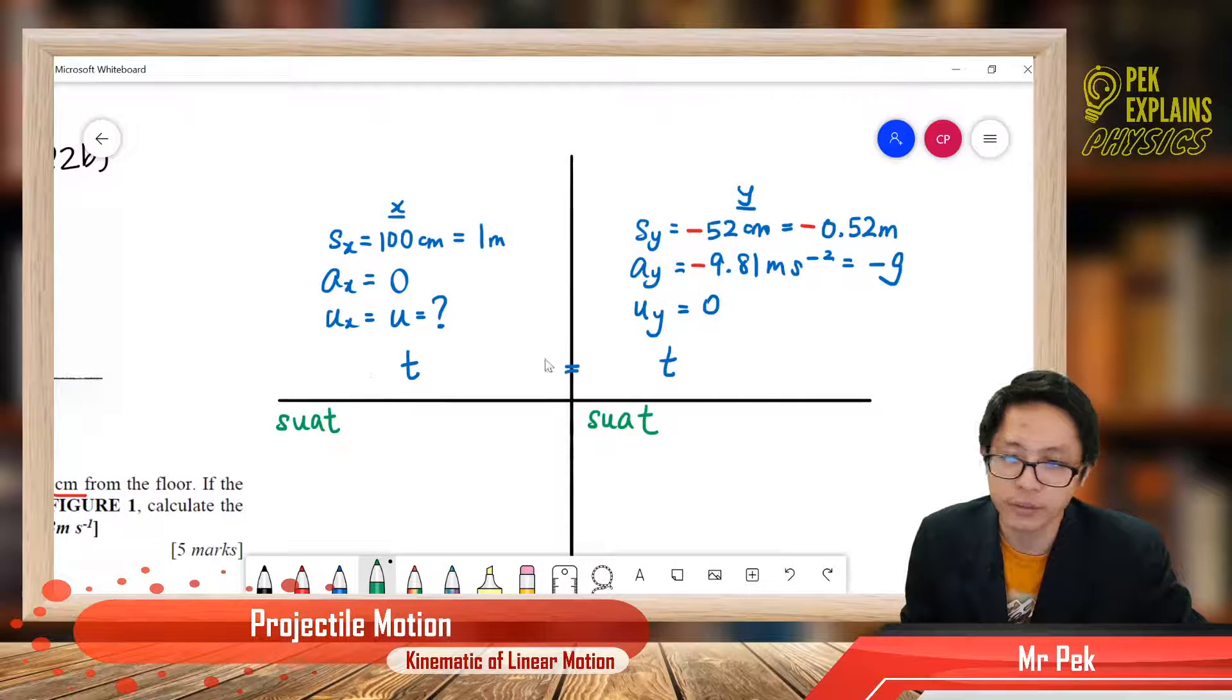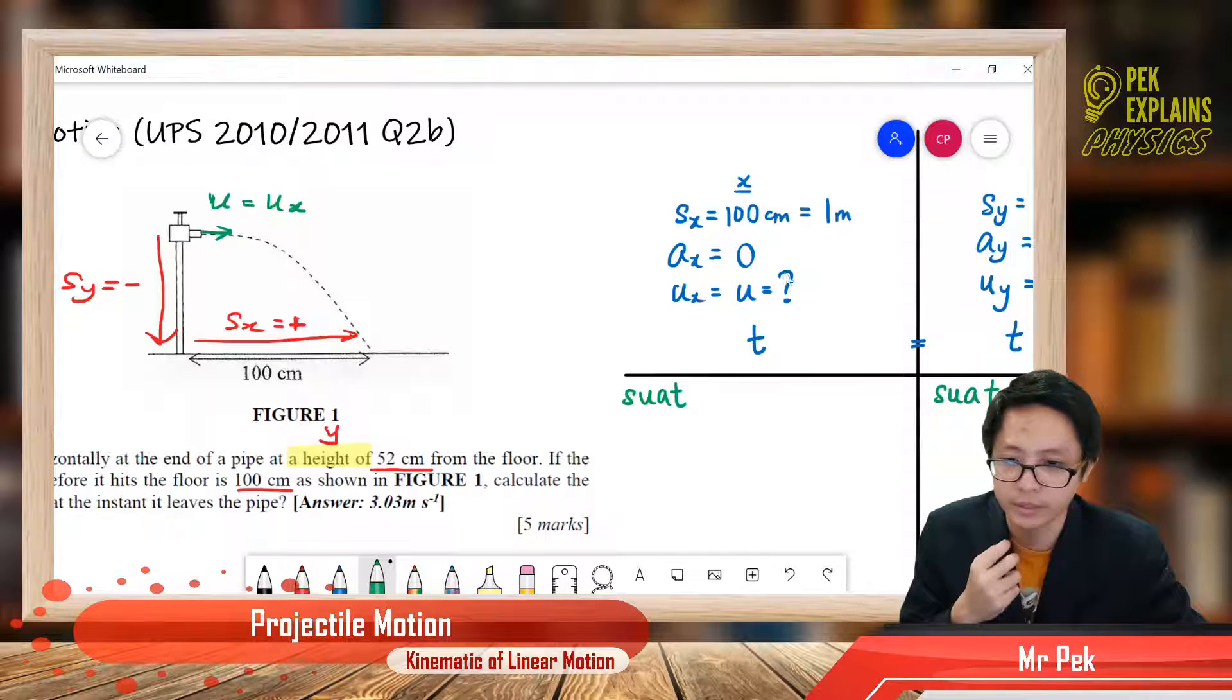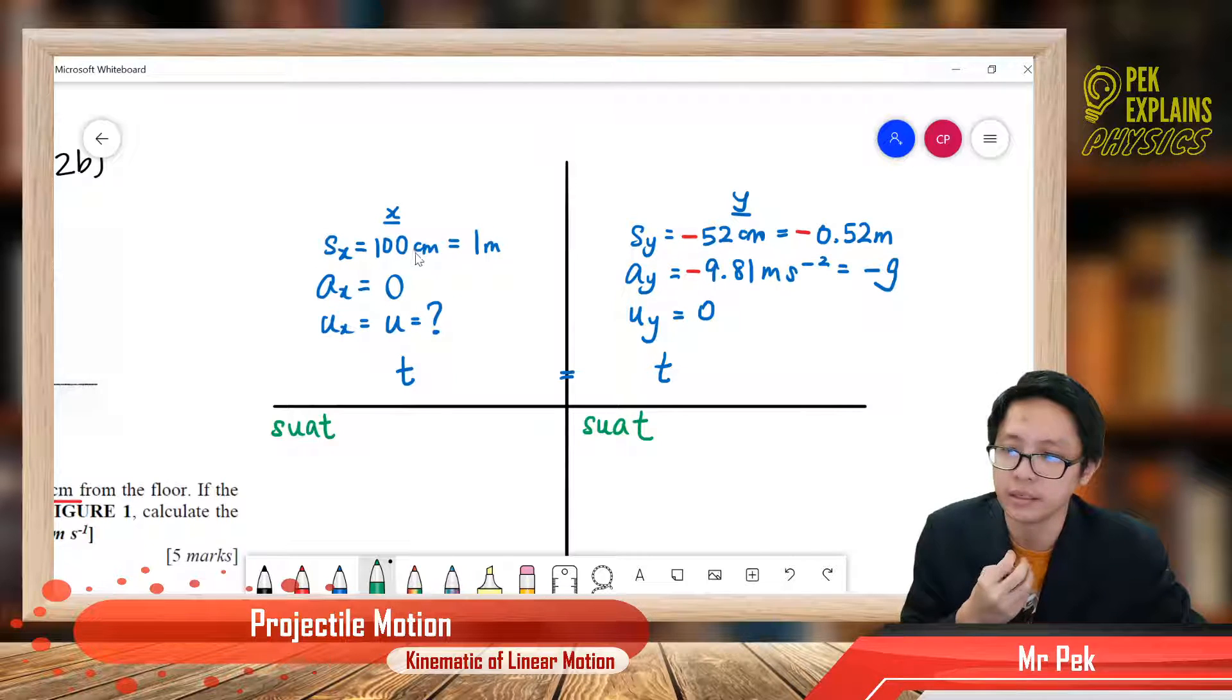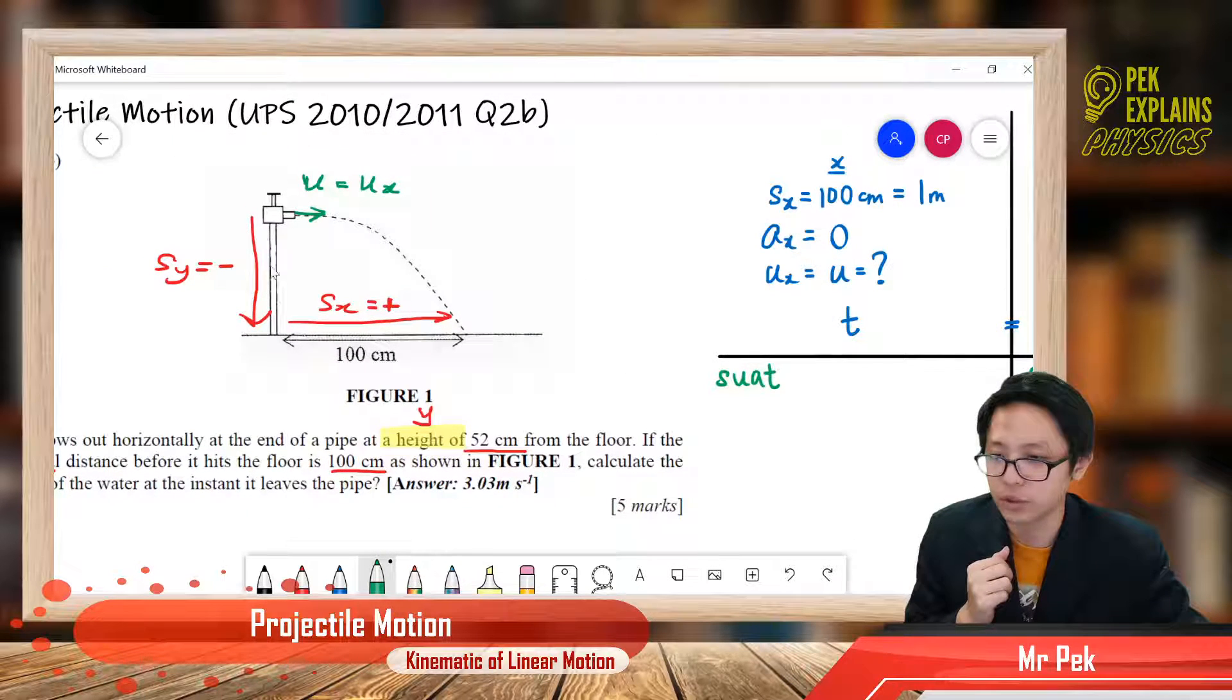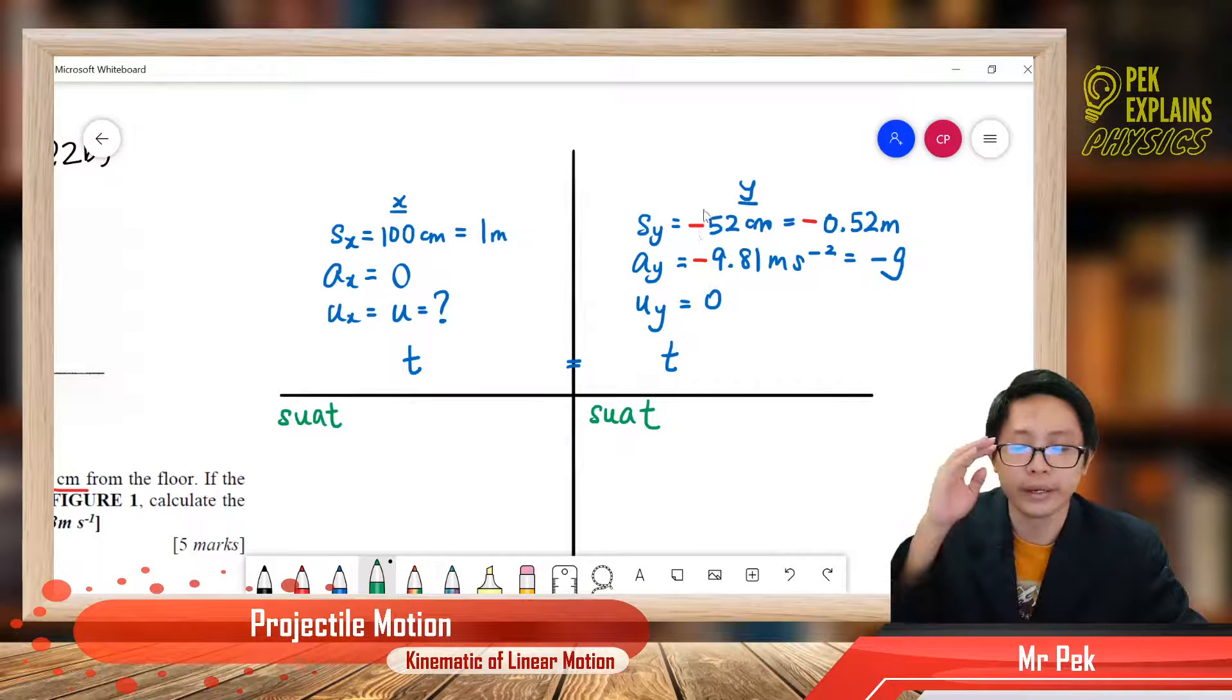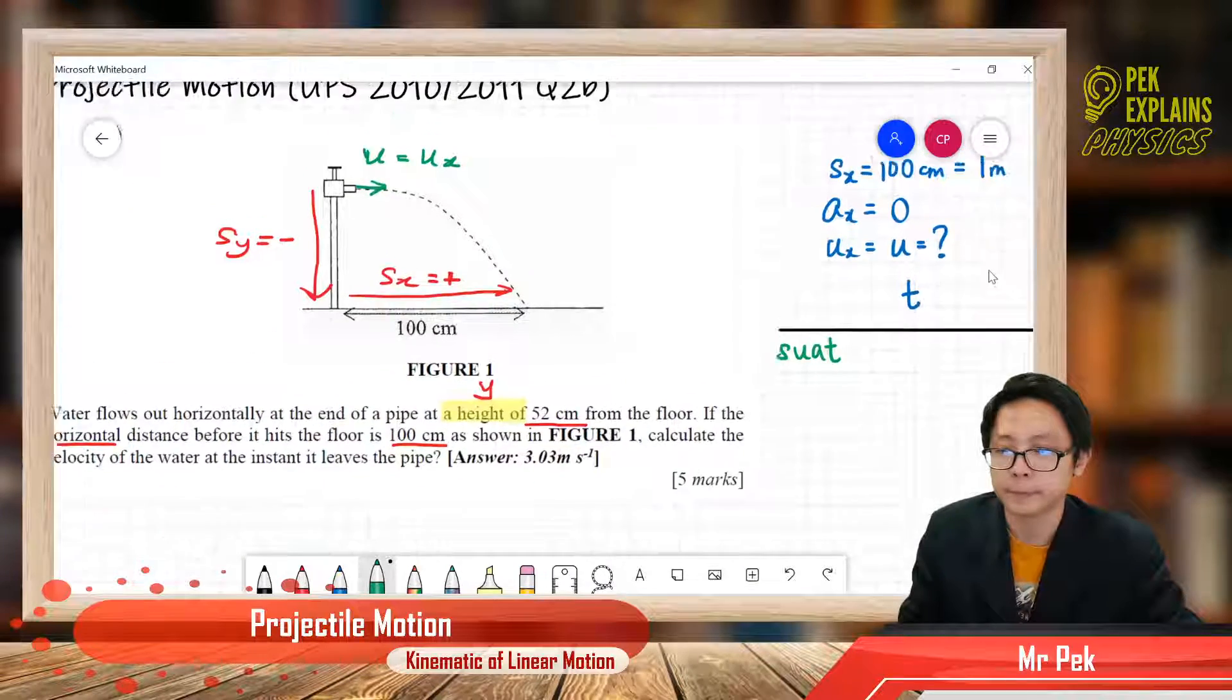Here are the information already given. The horizontal displacement is a positive 100 cm. We put two columns, x and y. The Sx is 100 cm, so it's 1 meter, positive 1 meter. But the Sy is going down, so negative displacement. It's negative 52 cm, which converts to negative 0.52 meter.